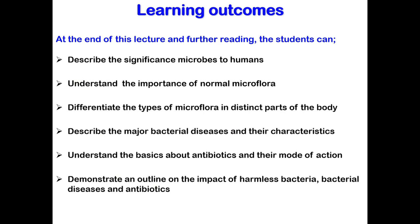There are several learning outcomes in this lecture. First of all, you should be able to describe the significance of microbes to humans — why they're important to us and the importance of the normal microflora in our body. Then we're going to look at the different microflora in different parts of the body, how the bacteria differs in, for example, the GI tract, the skin, etc. Then we'll talk about some major bacterial diseases, a few key examples, their pathogenesis, symptoms, and management. And then we're going to touch on the basics related to antibiotics and how they work. This will be fairly brief and we'll discuss this more later on in the course — this is just an introduction to antibiotics.